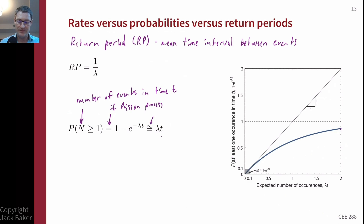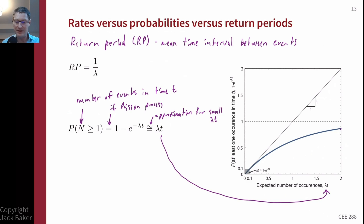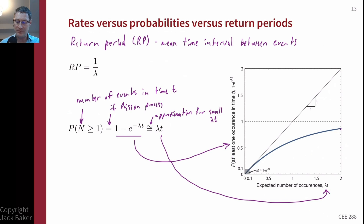There's also a good approximation for small lambda t: the probability is approximately lambda times t. The figure on the right plots expected number of occurrences (lambda t) on the horizontal axis against the exact probability on the vertical axis. The two track closely on a one-to-one line in the lower left, but diverge as rates get bigger — roughly when lambda t exceeds about 0.1. The approximation is good for lambda t ≤ 0.1 or so; beyond that they diverge, since probability can't exceed 1 but lambda t can.